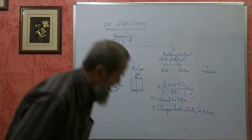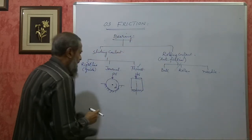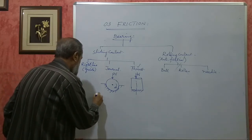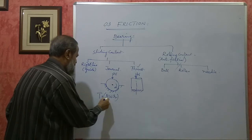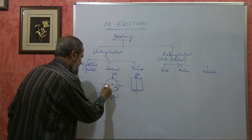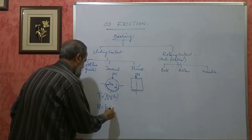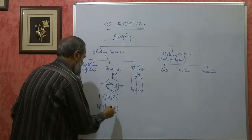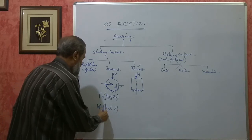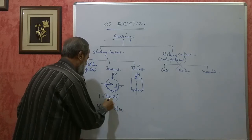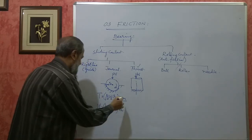For a general journal bearing, torque T = μWR, where mu is the coefficient of friction, R is the radius (half the diameter), and W is the load. W is calculated as Pb × L × D, where L is the length of the bearing, D is the diameter, and Pb is the permissible bearing pressure in kN/m². With Pb in kN/m² and L, D in meters, W comes in kilonewtons. With W in kN and R in meters, torque is in kNm.